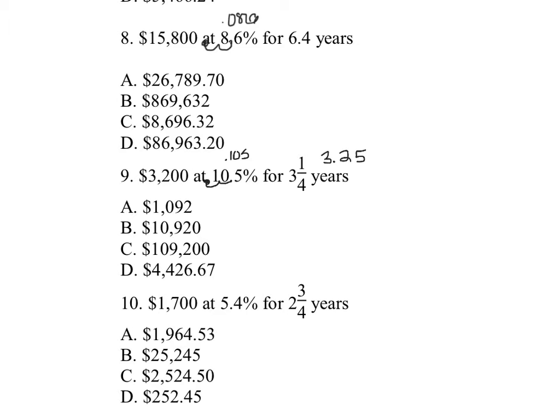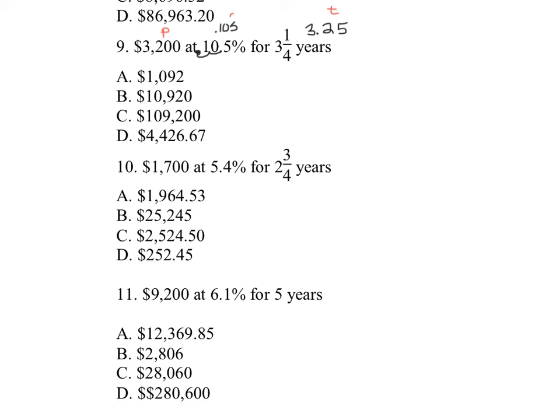Number nine, same thing on the rate, one-two, you're just moving the decimal. And if that confuses you, 10.5 divided by 100, that's a possibility. It's 0.105. And for three and one-fourth years, if you guys are on your calculators or your phone calculators and you are struggling with the fraction, some of you know that one-fourth is 0.25, and so I would just type in 3.25. If not, just divide one by four and that'll give you your decimal.